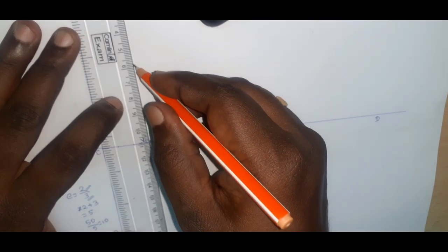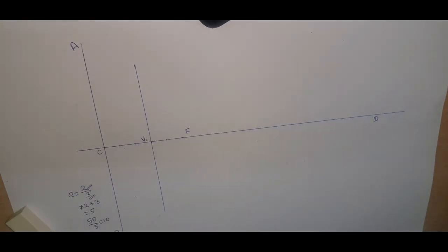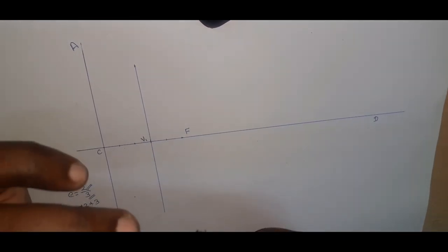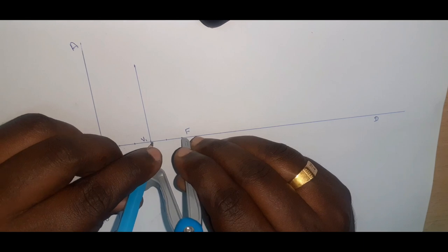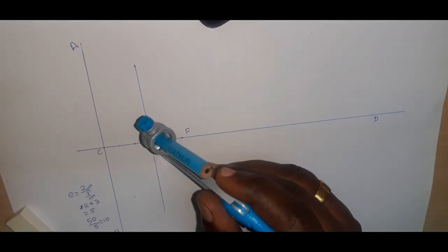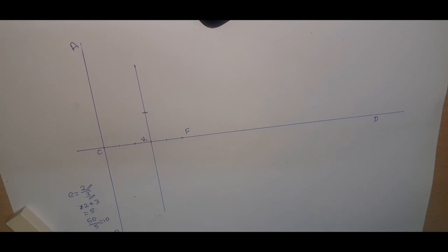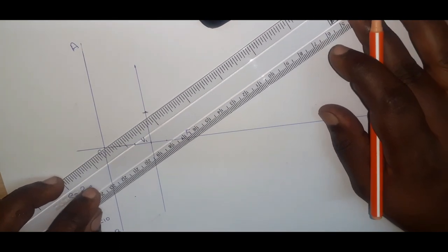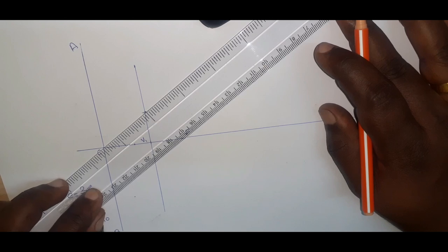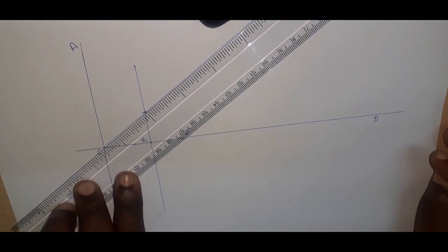Now I am drawing a line on it — these lines will be parallel. Take your compass, sharpen your pencil and fix it. Measure with one point here and another point here. Take the measurement and we got another point. Now we can draw the inclined line through here — from C, extending it like this.